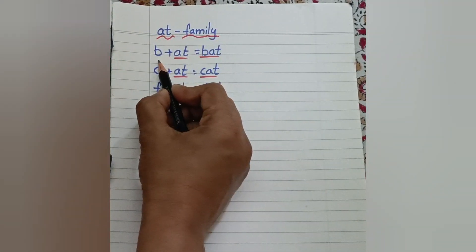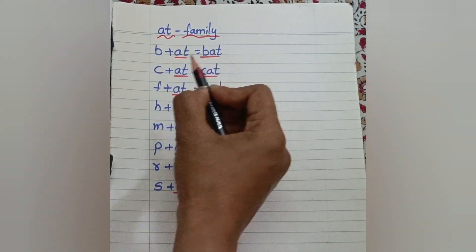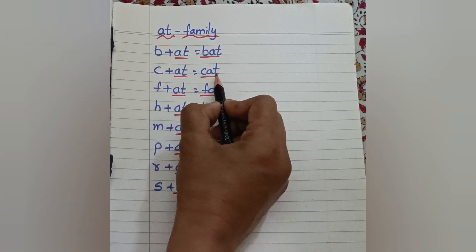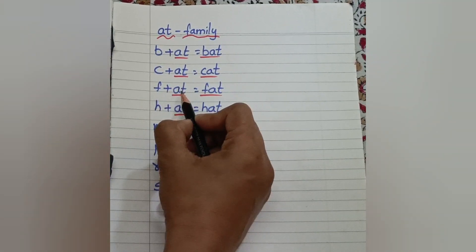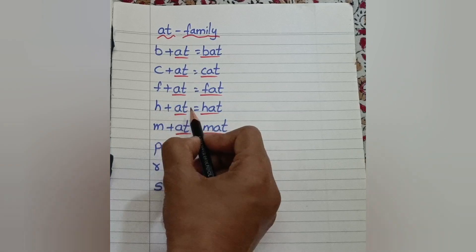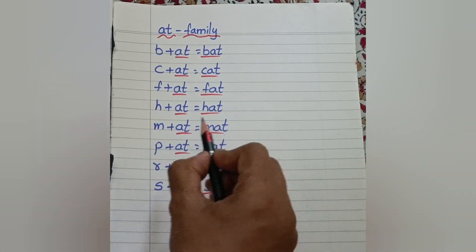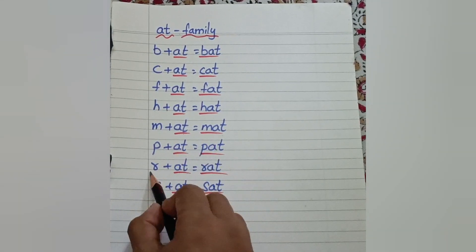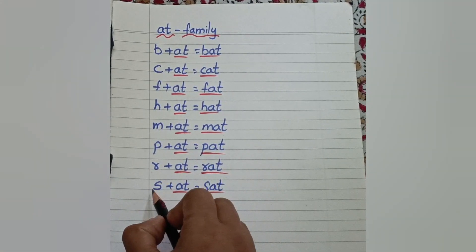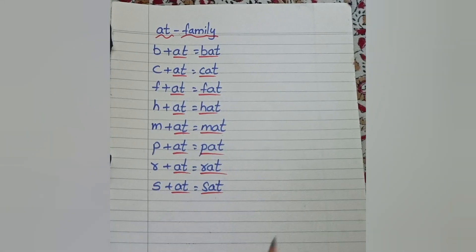And the next family is At family. B, At: Bat. K, At: Cat. F, At: Fat. H, At: Hat. M, At: Mat. P, At: Pat. R, At: Rat. S, At: Sat.